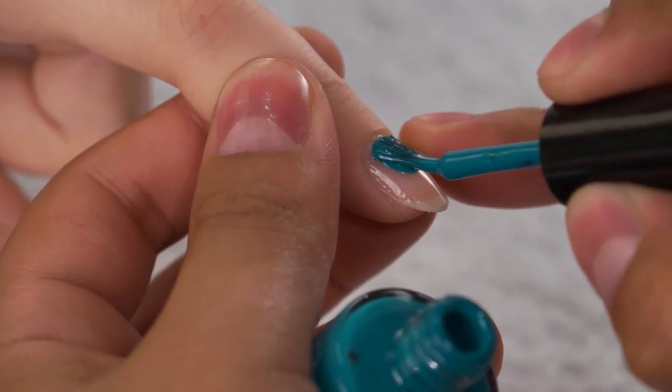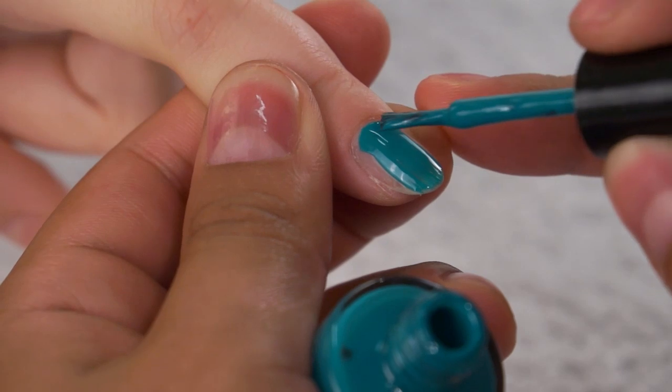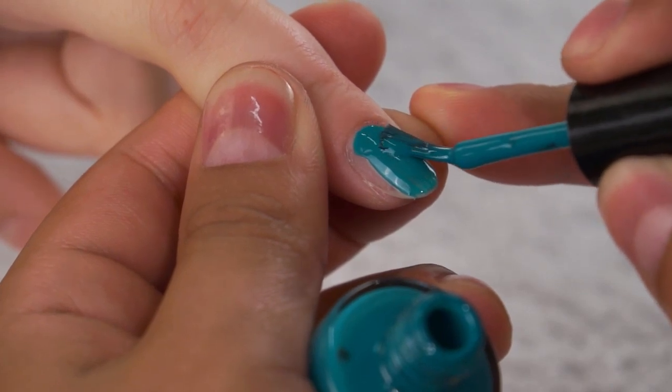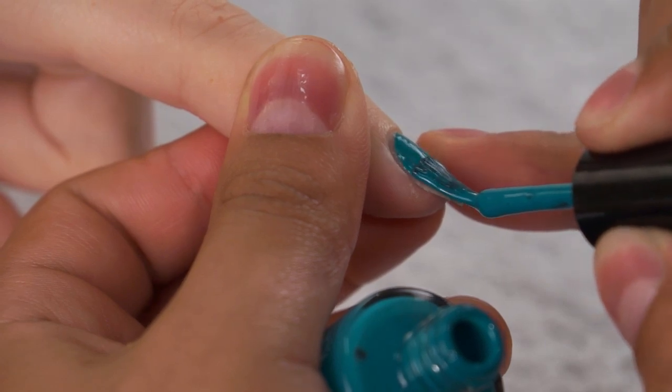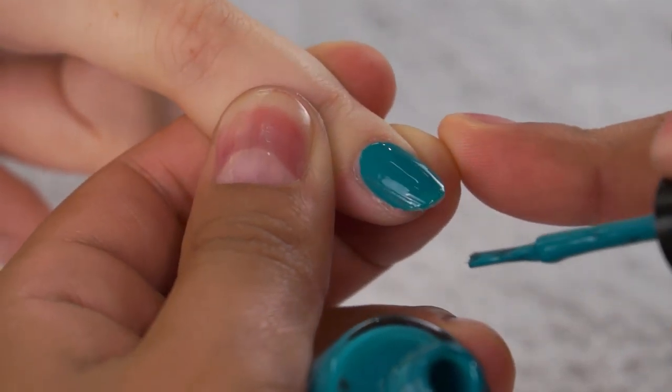Start from the cuticle area, down the center, swipe on one side and then the other side. Let it dry for a couple of seconds and then we can do a second coat.